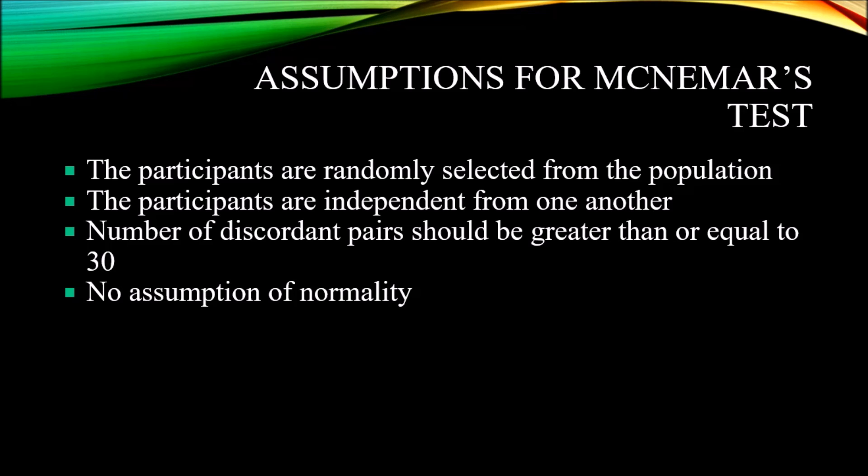But those would be concordant pairs. So, that wouldn't help you meet this assumption for McNemar's test. In the McNemar's test, you need to have at least 30 discordant pairs, 30 participants who moved from yes to no, or no to yes.